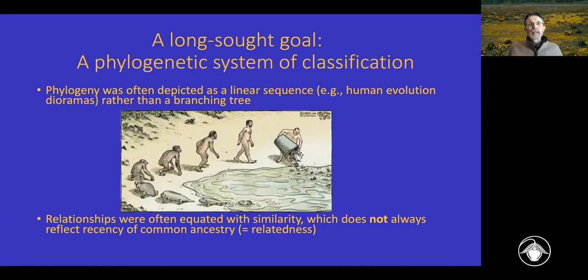We could get away with that depiction for humans because today we're the only hominids left on the planet. But there were times earlier in human history where we were sharing the planet with other hominids, the result of a branching phylogeny with major divergences going on within the hominid phylogeny. This view of evolution as a linear sequence led to a lot of problems in thinking about phylogeny in general.